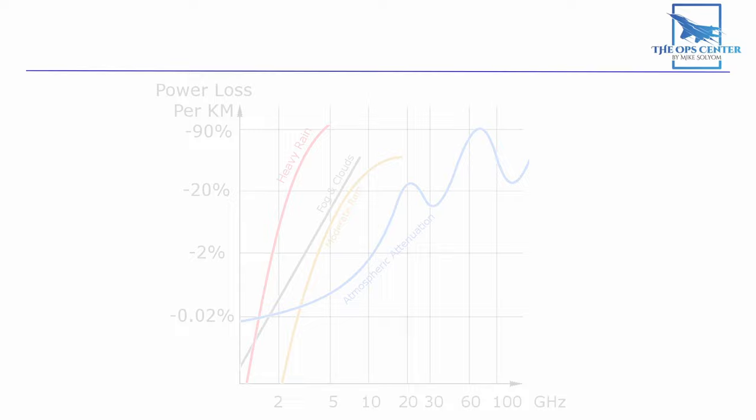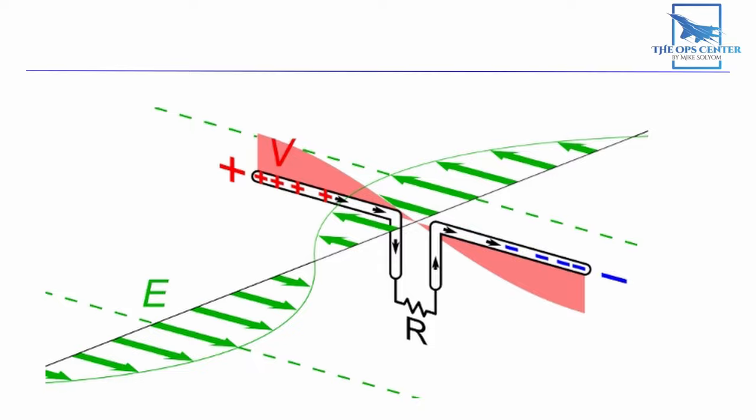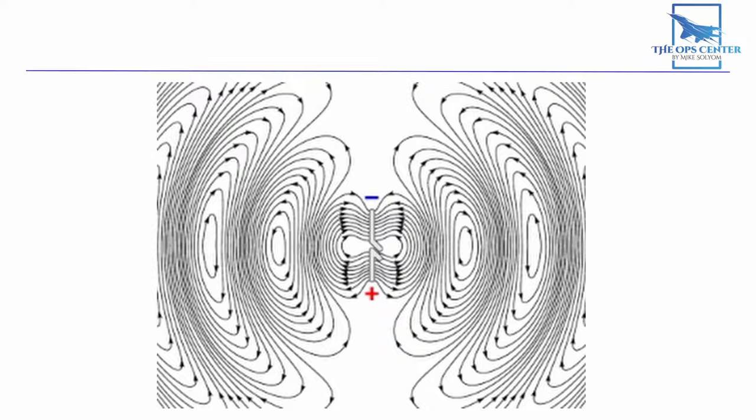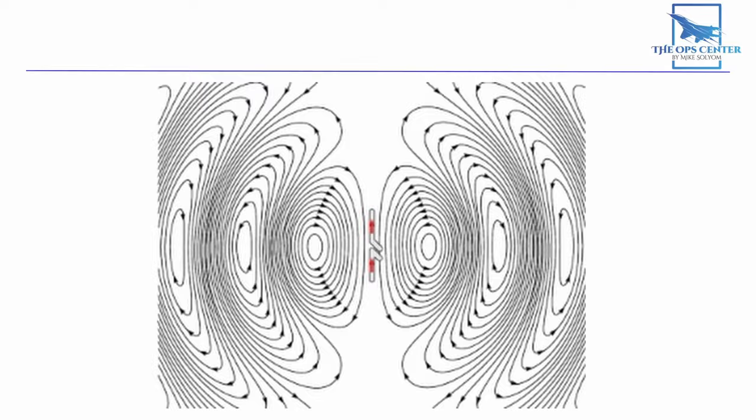Here we can see another antenna. In this case, it's a dipole because it has two ends as opposed to a single one like the monopole we looked at earlier. As our antenna radiates, we see that the waves aren't two-dimensional. They're actually big three-dimensional waves, kind of like big bubbles.